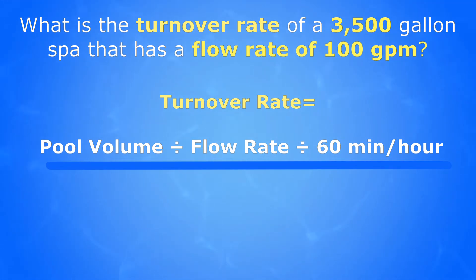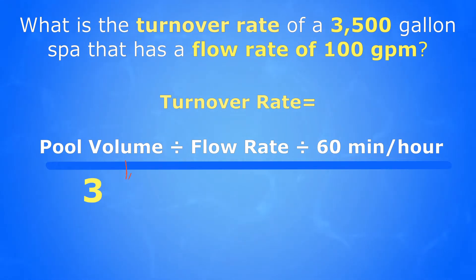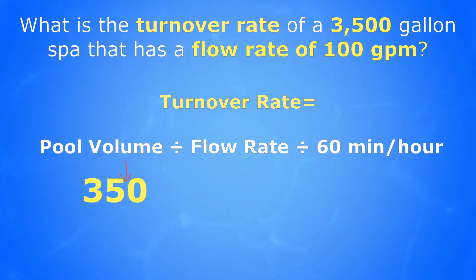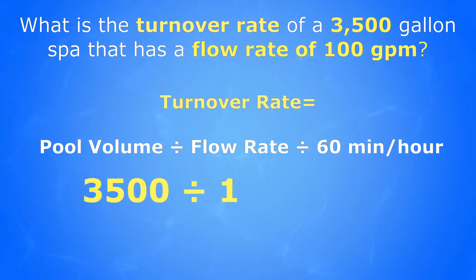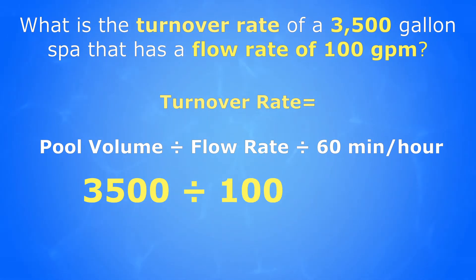So let's go ahead and fill our formula in. Our volume is 3,500 gallons, so let's put that right there. We divide by our flow rate, which is 100 gallons per minute.